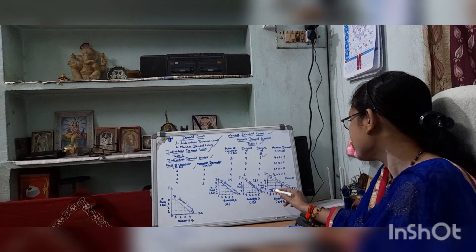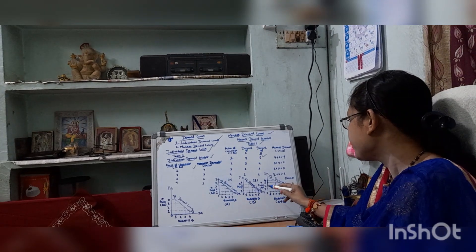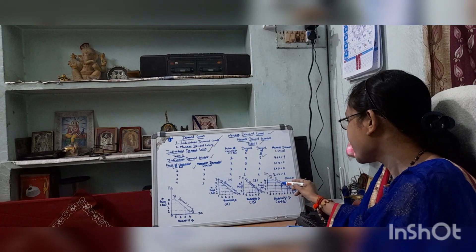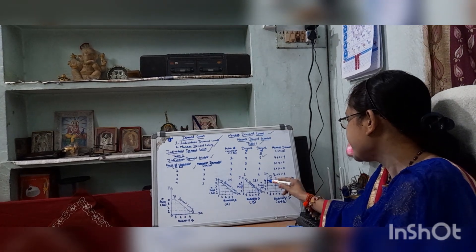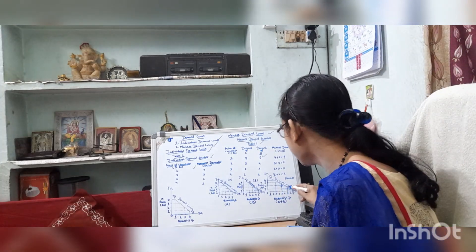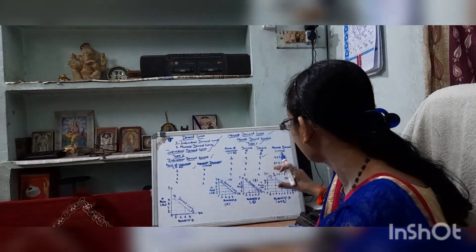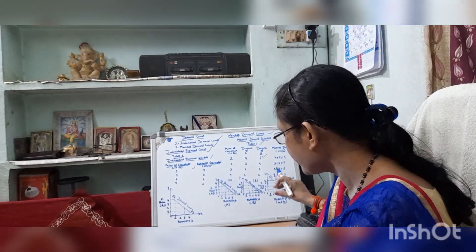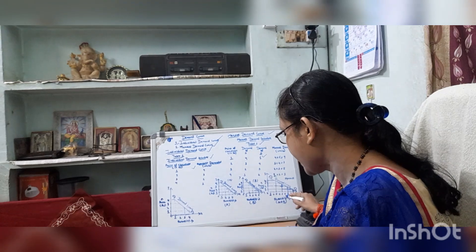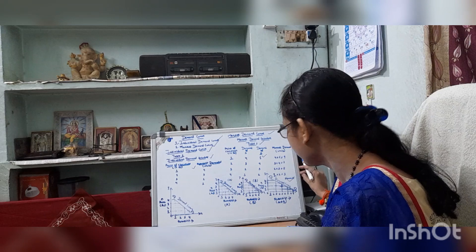Where the price is 1, quantity demanded is 9. When the price is 2, quantity demanded is 7. When the price is 3, quantity demanded is 5. When the price is 4, quantity demanded is 3. This is the aggregate summation of the demand curve of A and demand curve of B. This figure shows the A plus B market demand curve when there are 2 consumers.